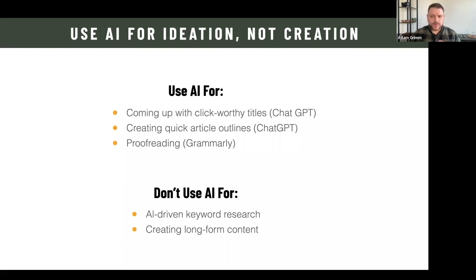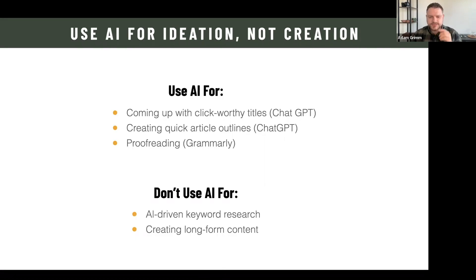Before leaving the strategy section, a word on AI. In the world of SEO, AI is really good for some things and really bad for others. AI is great for coming up with clickworthy titles — you can put a keyword like 'patio costs' into ChatGPT and ask for 10 titles and it'll give you great ideas. It's also good for creating article or landing page outlines — give ChatGPT a topic and it'll outline your whole post. And tools like Grammarly are great for proofreading sentence structure before you publish.